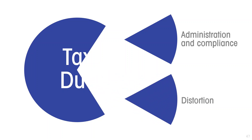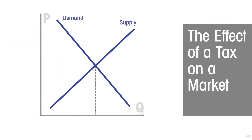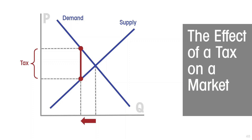Then there is the structural distortion to the economy from the fact of a tax. When a tax is levied, it puts a wedge between the amount that the purchaser ends up paying and the amount that the supplier ends up receiving. That wedge is the amount of the tax, and it reduces the amount that is traded and creates a deadweight loss.